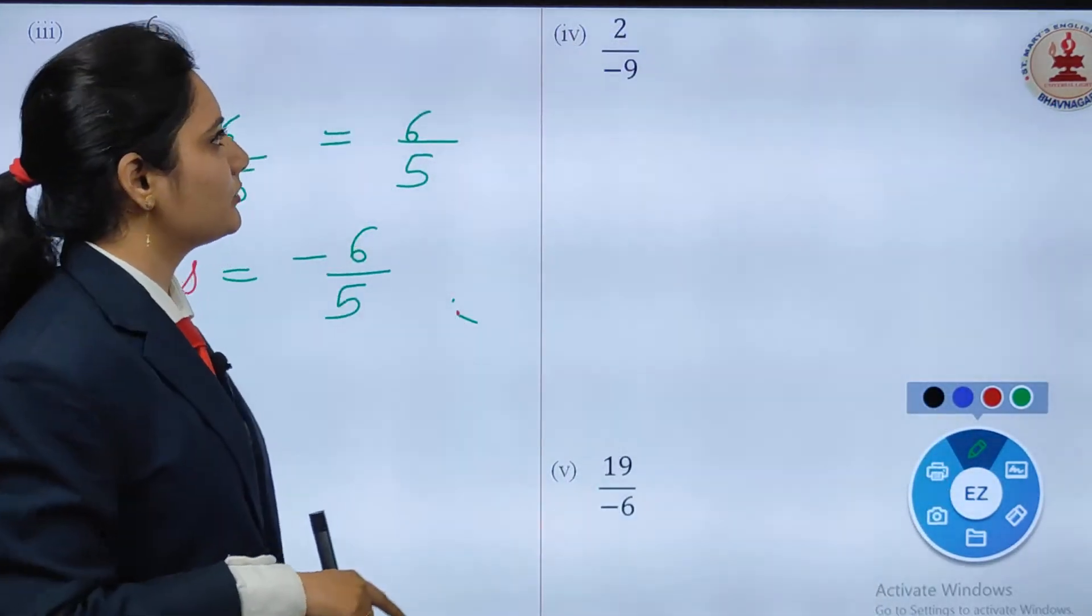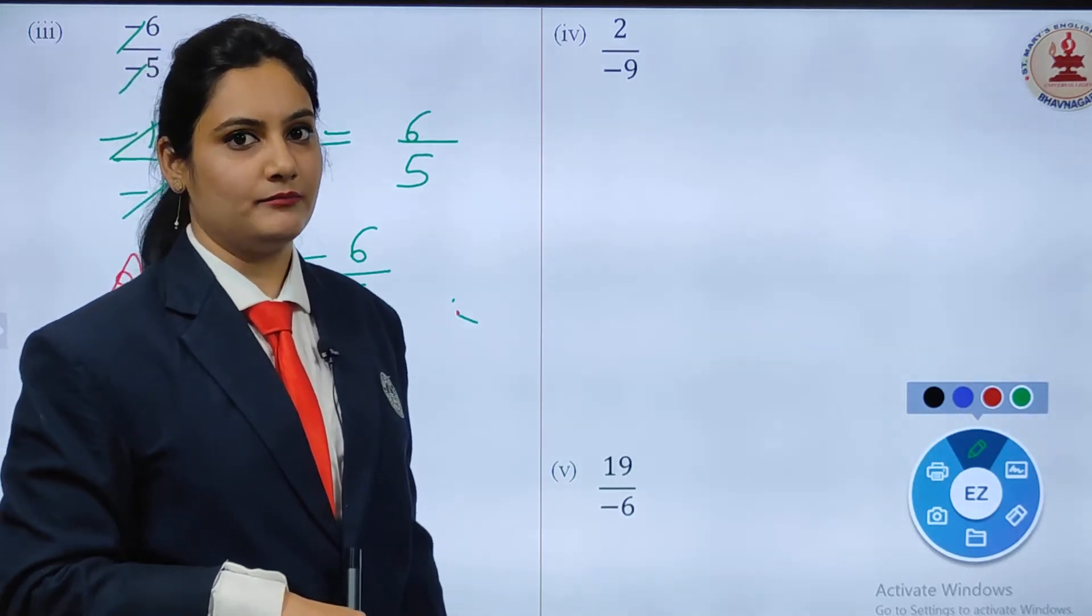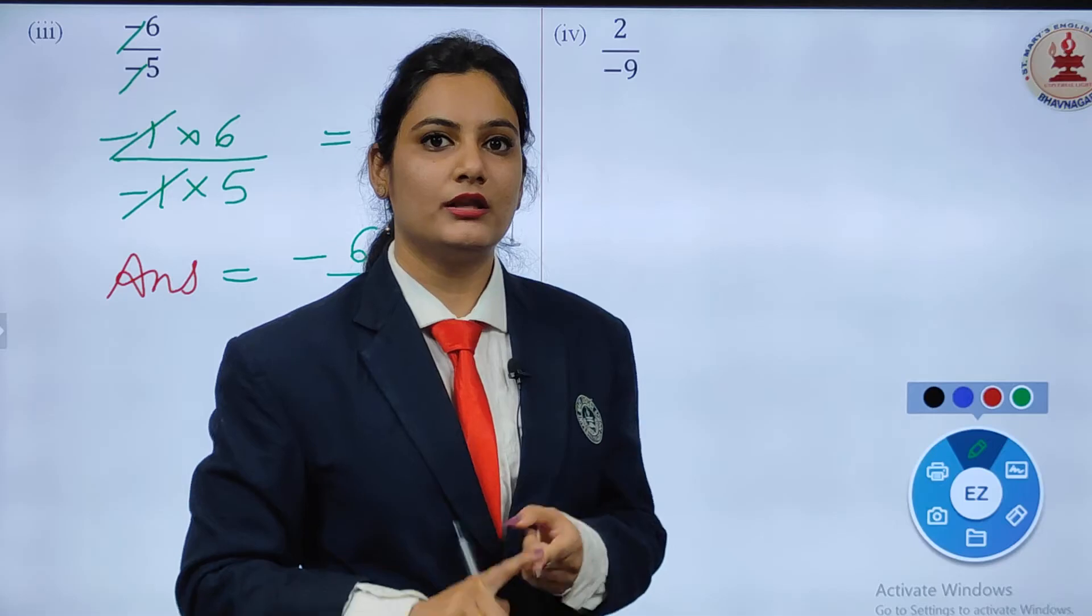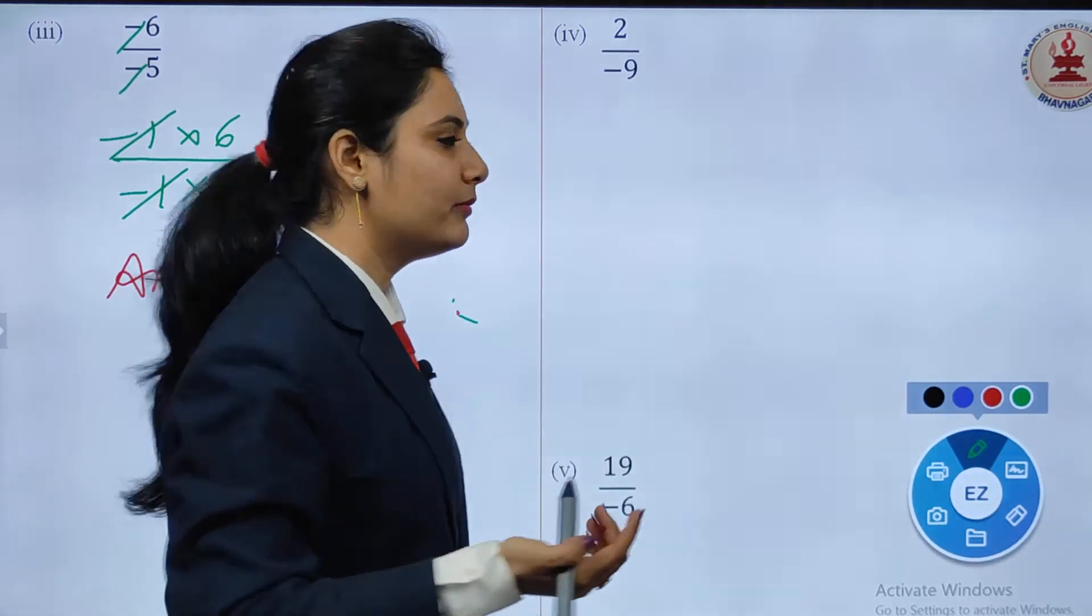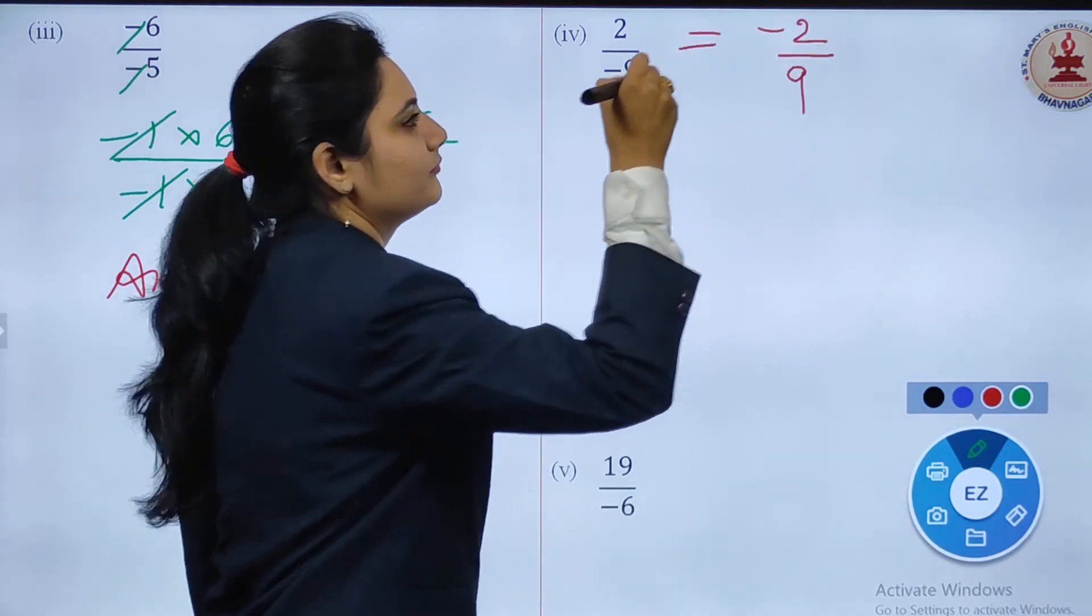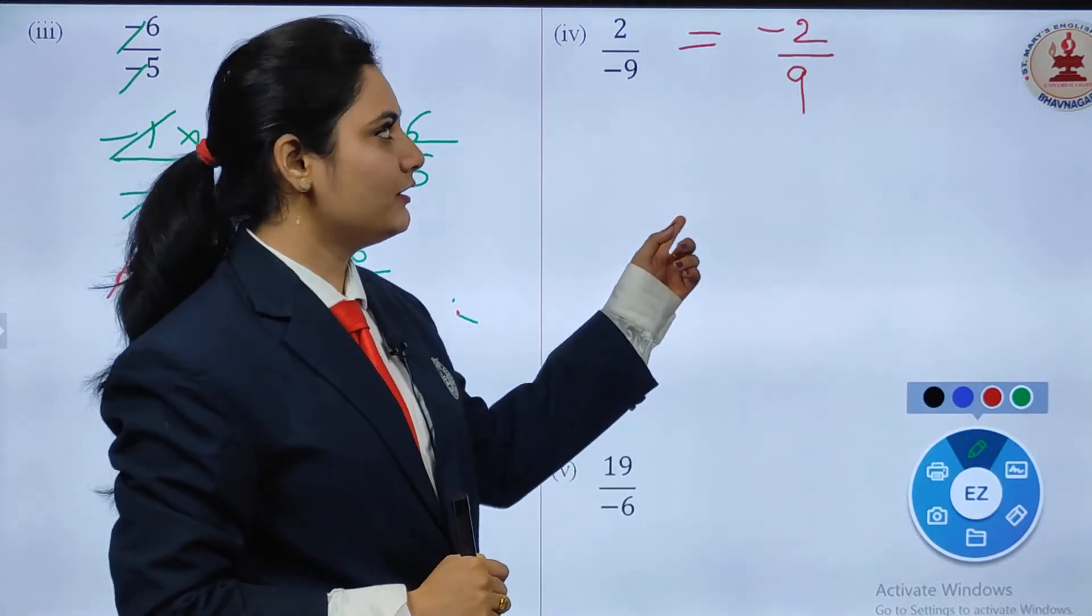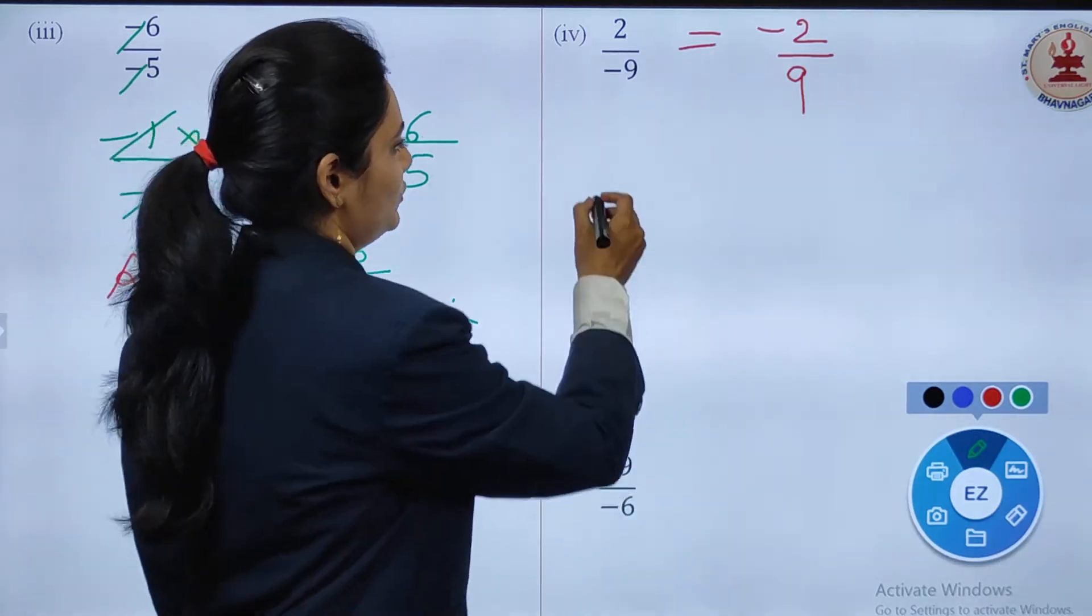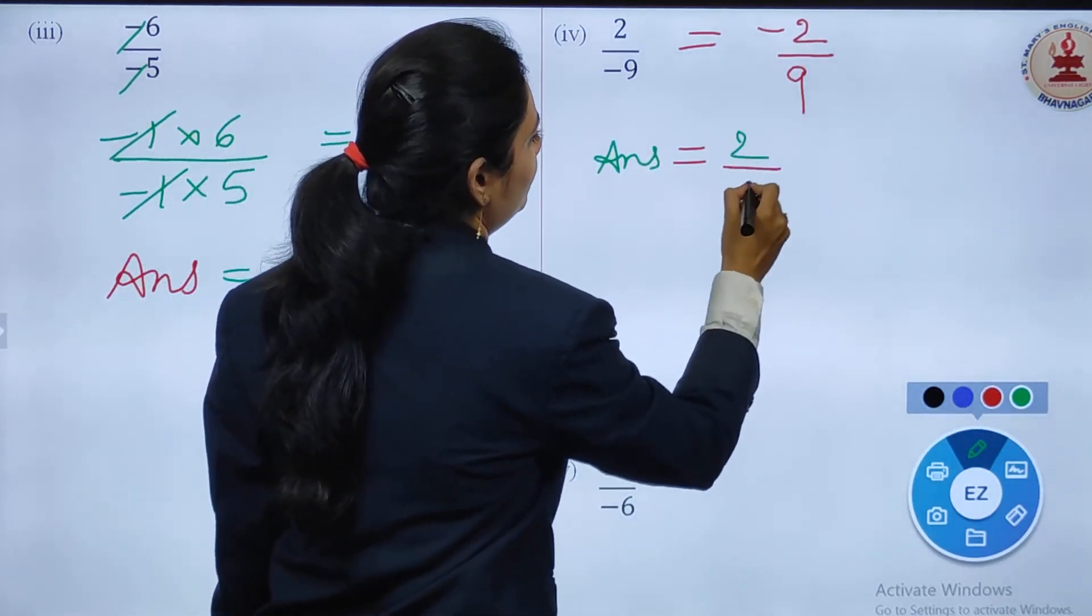Now the fourth question: 2/-9. If the negative sign is in the denominator, you can take it to the numerator. So the question becomes -2/9. This is our actual question. It is negative, so just change the sign for the additive inverse. The answer is 2/9.